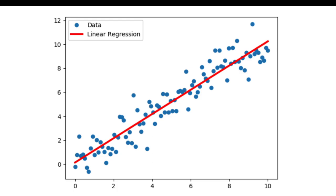For example, if you want to predict the weight of a person based on their height, weight is the output and height is the input. Both input and output are provided to the model, and the model tries to derive a correlation between these two features. That correlation is nothing but the straight line it tries to derive — this red line on the screen is the linear regression line.